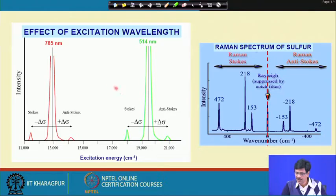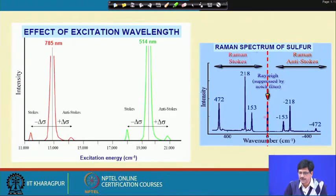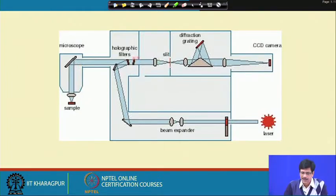This is an example of a Raman spectrum of sulfur where both Stokes and anti-Stokes are shown. Characteristically, they are very symmetrically placed — at 218 and minus 218, 153 and minus 153, and 472 on both sides. What is presented here is the Raman shift, meaning the difference in frequency between the incident laser and the emitted light, with intensity in arbitrary units.